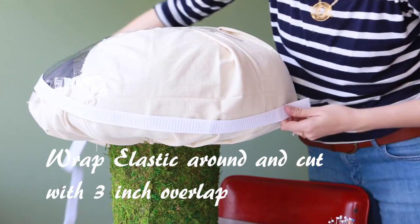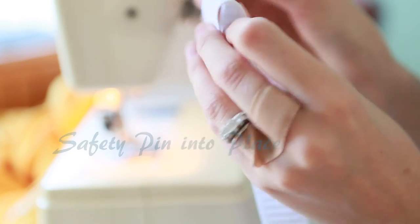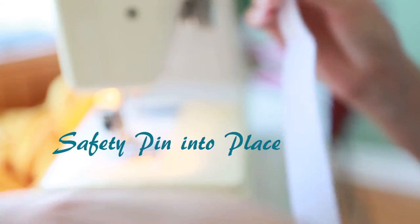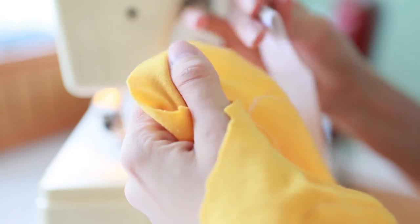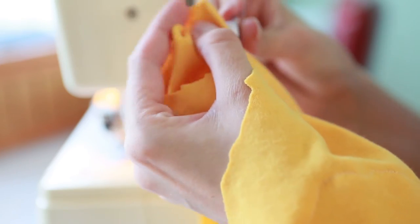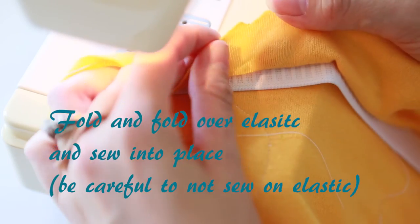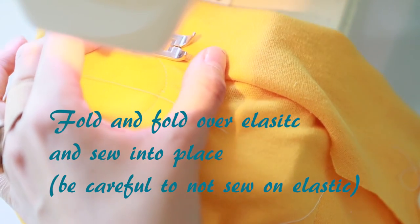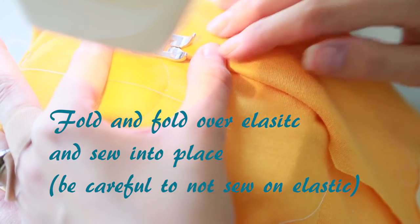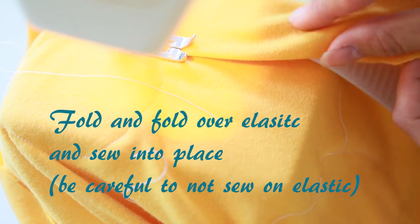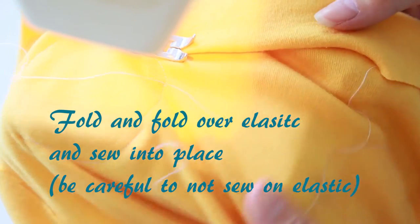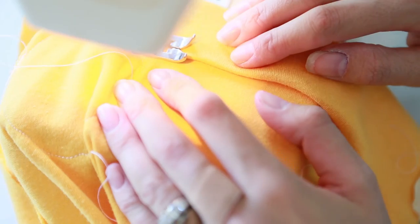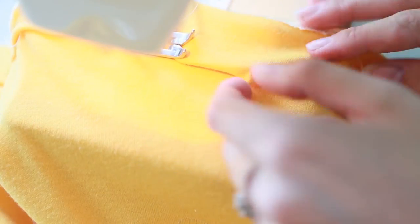Wrap your elastic around the circumference of your mushroom and cut it with about 3 inches to spare overlapping. And then you're going to safety pin your elastic into place and make sure that it doesn't twist. You're going to safety pin it a few inches down on the fabric. Then put it on the sewing machine and you'll want to fold it over once, about half an inch and then over again, and you're going to want to sew this together, but make sure you do not sew the elastic. You want to sew just the fabric. So just use your fingers to feel where it is and move around slowly.